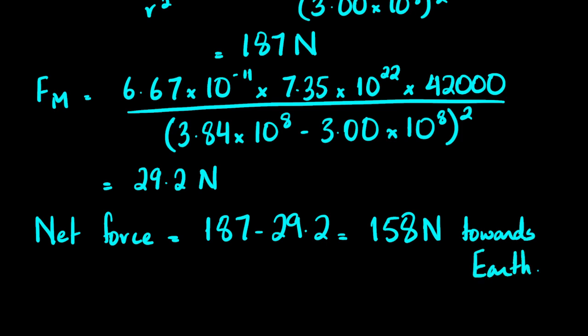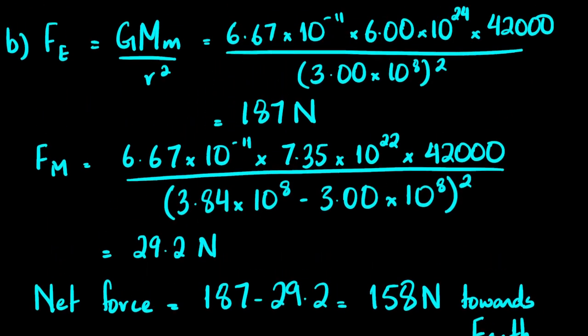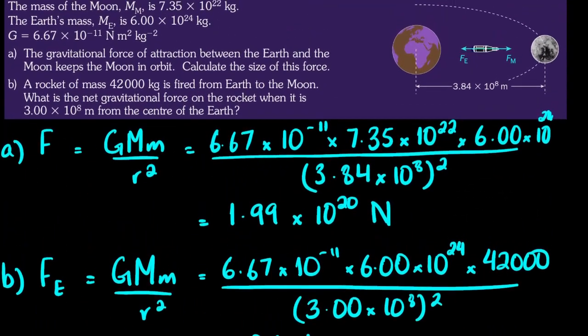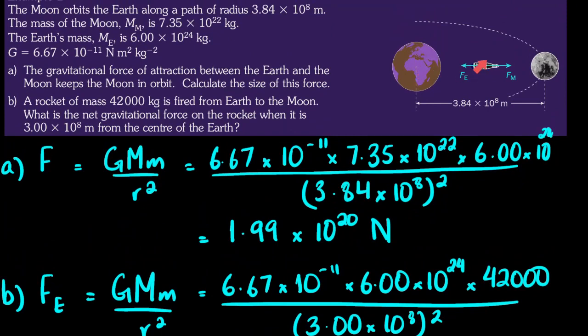As the rocket moves away from Earth toward the Moon, the Earth's gravitational force decreases while the Moon's force increases. There will be a point where both forces are equal. This concept will be explored in more detail in the context of gravitational fields in the next lecture.